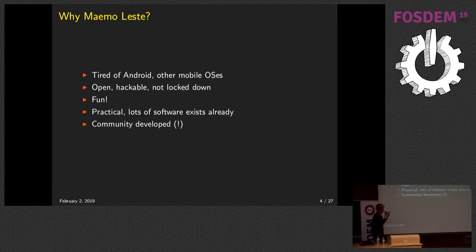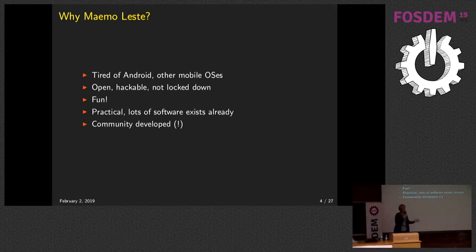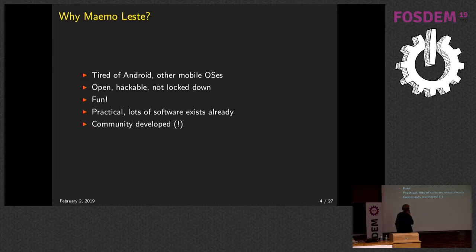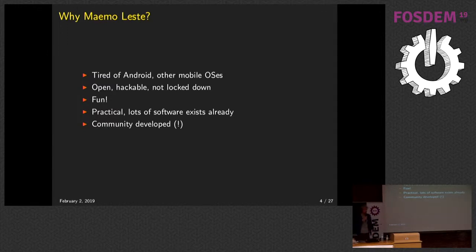I have personal reasons for actually doing this. I've used a Nokia N900 phone ever since it was released by Nokia, and I don't really like Android. I want a more open phone — one that gives me root by default, doesn't lock down, and doesn't require me to install some app store just to do basic things. It's a lot of fun to learn about various components of Linux subsystems. It's very practical because a lot of software already existed for the old Nokia OS, and it's entirely community-developed, so there's no company backing it pulling the project in any particular direction.